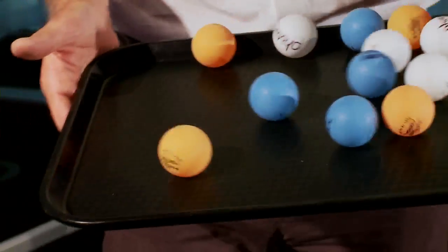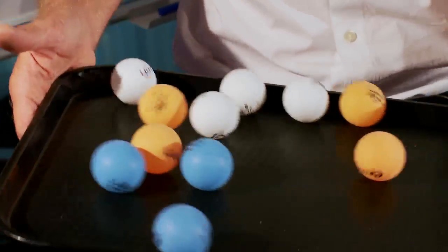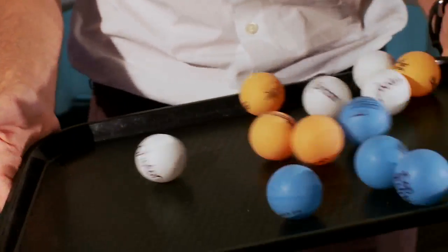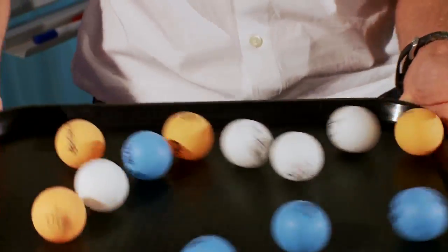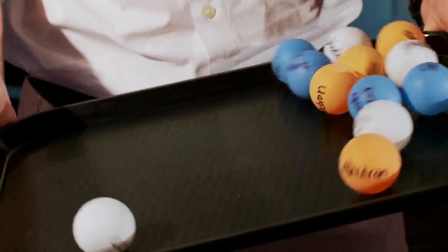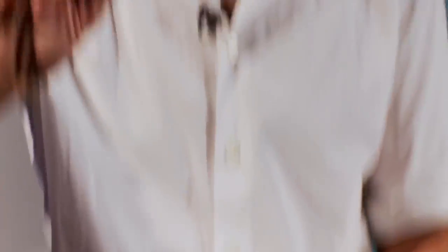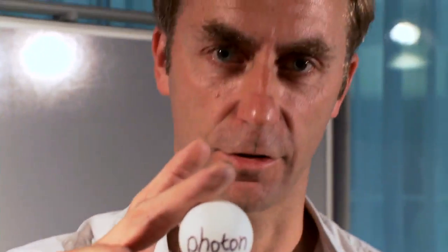So in the early universe all of these particles weighed absolutely nothing. They had zero mass and they all move around at the speed of light. They all behave like the photon.